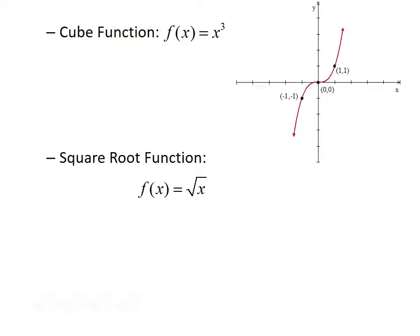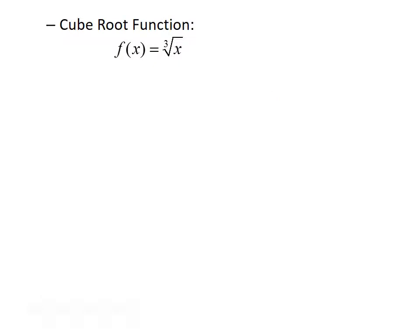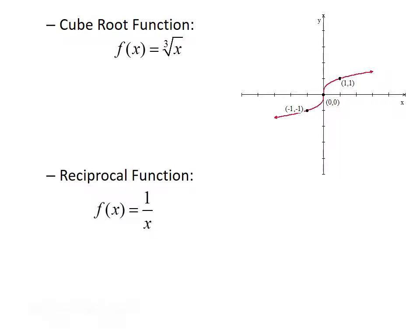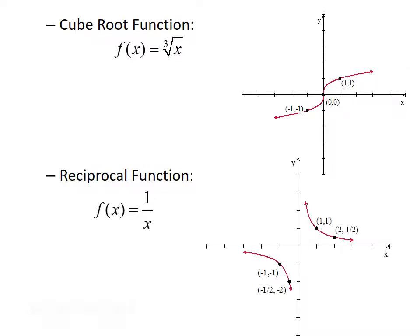Next, we have the square root function, f of x equals the square root of x. We have the cube root function, f of x equals the cubed root of x, whose graph is kind of an s-shape going from the third quadrant to the first quadrant, but it goes more horizontal than vertical. We have the reciprocal function, f of x equals 1 over x, which has a horizontal asymptote of the x-axis and a vertical asymptote of the y-axis, so the graph gets close to those axes but never actually touches them.